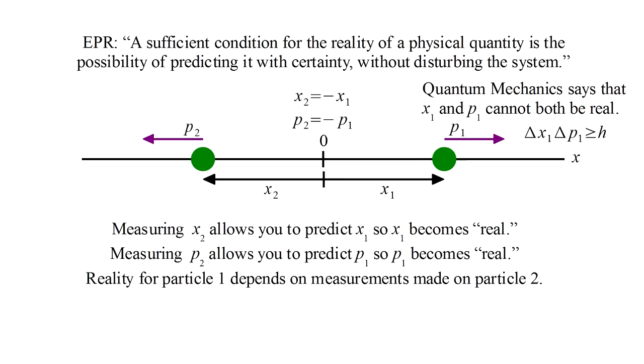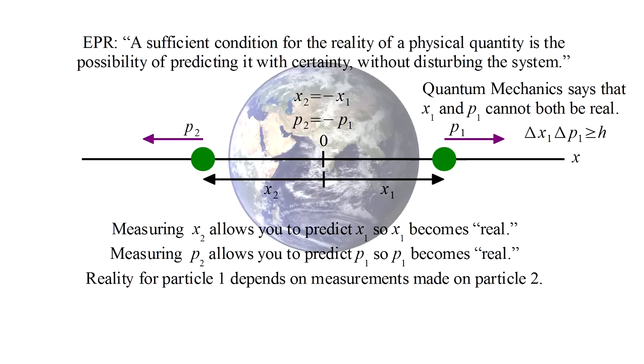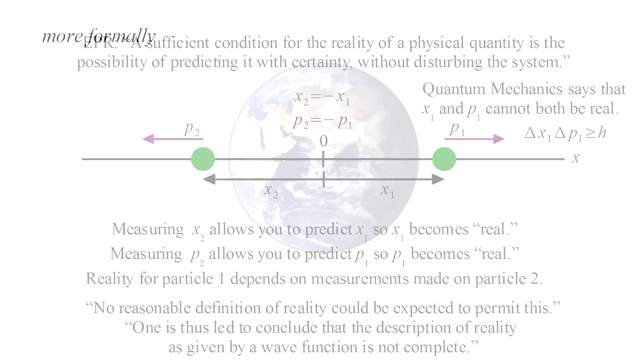In this experiment, reality for particle one depends on measurements made on particle two. And these particles can be arbitrarily far apart. EPR argue that no reasonable definition of reality could be expected to permit this. One is thus led to conclude, the description of reality as given by a wave function is not complete.